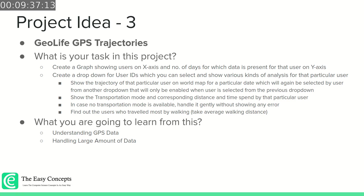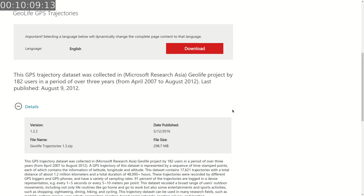Now let's talk about the third project idea, where we will be analyzing the GPS dataset collected in the Microsoft Research Asia GeoLife project. The dataset was collected by 182 users over a period of more than 5 years. I am going to post all the links related to this project in the description so that you can easily access the resources and solve this interesting problem. Here is the dataset — this is GPS trajectory data collected in the Microsoft Research Asia GeoLife project. I will post the link of this dataset in the description and you can download it.